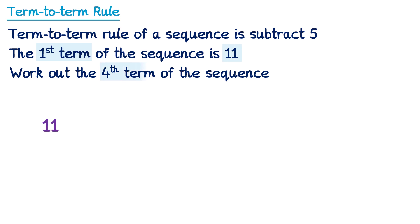And we're asked to work out the fourth term this time, so we need to work out three more terms, using the term-to-term rule, subtract 5. So to get from 11 to the second term, we need to subtract 5. 11 subtract 5 is 6. Then to get from the second term to the third term, we subtract 5 again. 6 subtract 5 is 1.